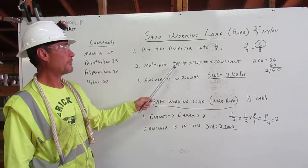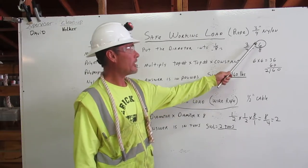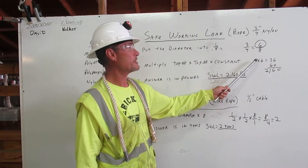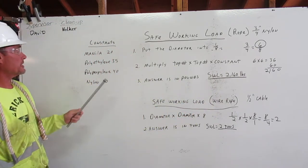Two, multiply the top number by the top number by the constant. So our top number is six, so we are going to apply six by six. And for three-quarter inch nylon rope, our constant is sixty.